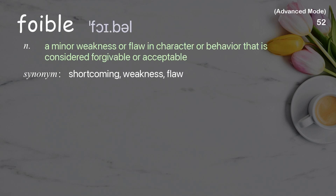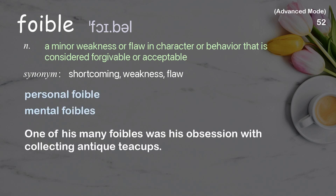Foible: a minor weakness or flaw in character or behavior that is considered forgivable or acceptable. Examples: personal foible, mental foibles. One of his many foibles was his obsession with collecting antique teacups.